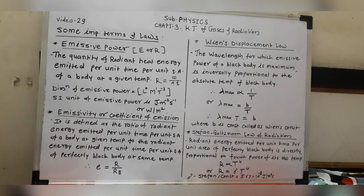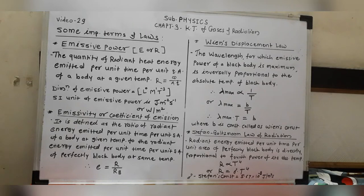In the radiation topic, there are some important terms: emissive power, and emissivity, also called the coefficient of emission. Then there are two laws: Wien's displacement law and Stefan-Boltzmann law. These are important for your objective questions as well as one-mark or two-mark answers.